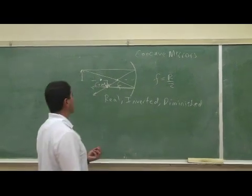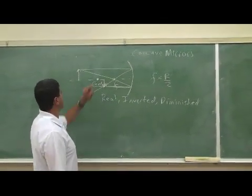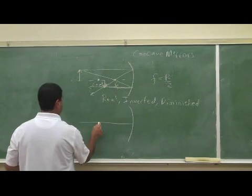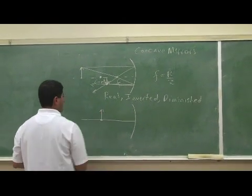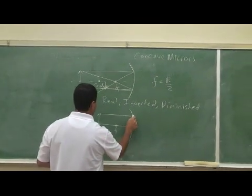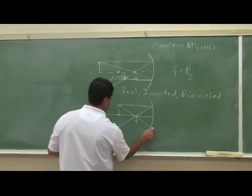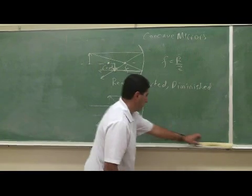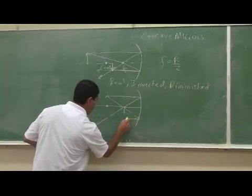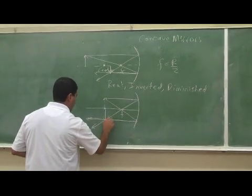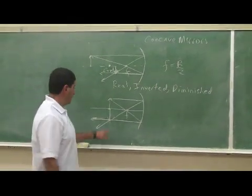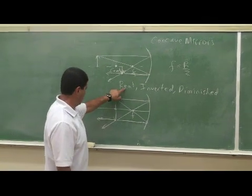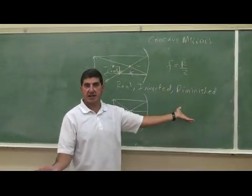What happens when the object is exactly at the center? Then you do the ray diagramming. You go straight, you go down, you go through the focal point. And if you do this good, you will see that it will form an image exactly at the same location where it was found. It will be real, it will be inverted, but it won't be diminished. It will be exactly the same size.